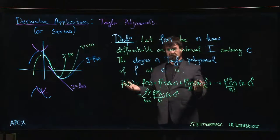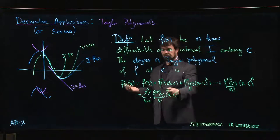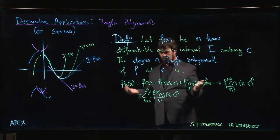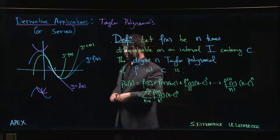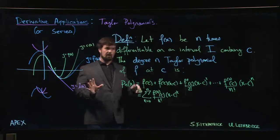Those of you who are seeing this in calculus one, you're going to stop at degree n. We haven't talked about sequences and series yet. So that's the formula for Taylor polynomials.